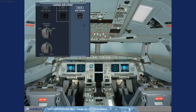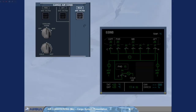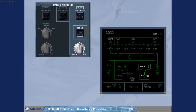The bulk cargo compartment control is located on the right side of the cargo air-con panel on the overhead panel. An Isol valve push-button switch, which is normally in the lights-out position, can be used to manually control the inlet and outlet isolation valves to close and the extraction fan to stop, or to leave automatic control of these valves and fan by the ventilation controller. The hot air push-button switch, which is normally in the lights-out position, allows the ventilation controller to operate the fan heater when the ambient temperature is below the selected one, or to manually stop it.